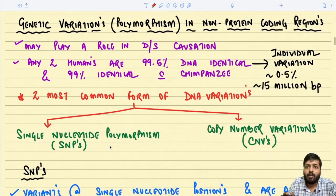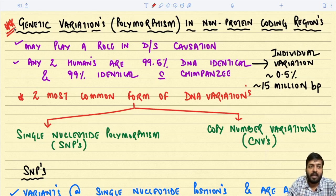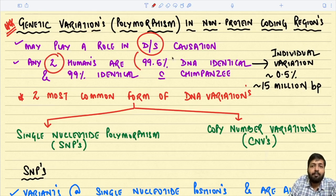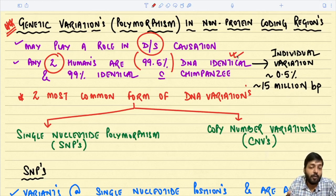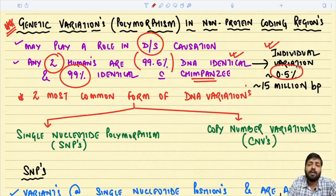Now, still within the non-protein coding region, we need to understand genetic variations or polymorphism, which may play a very important role in disease causation. Any two human beings are 99.5 percent DNA identical, and we are 99 percent identical with chimpanzees. So only 0.5 percent variation exists between two human beings, accounting for approximately 15 million base pairs.